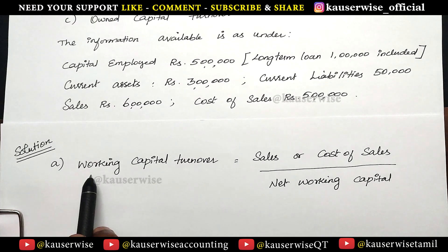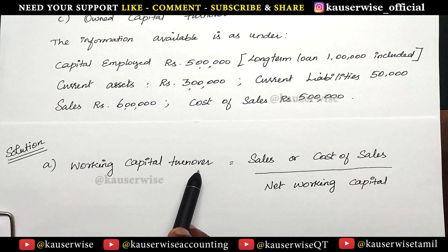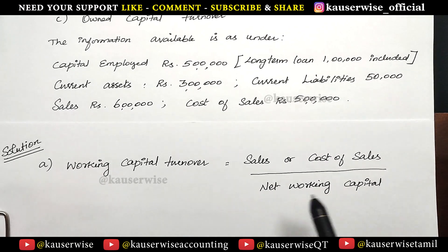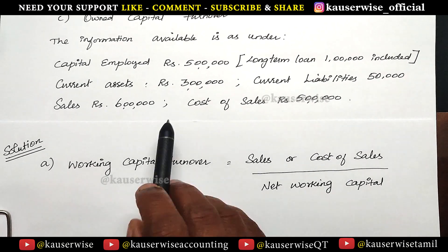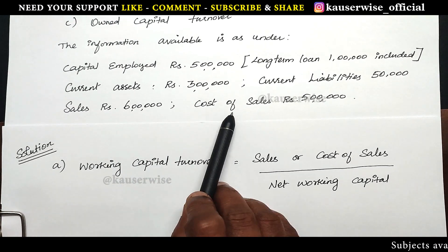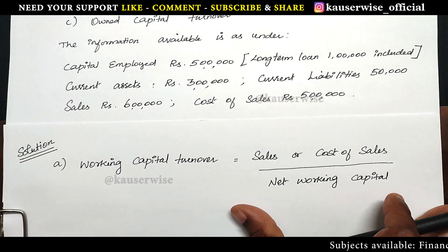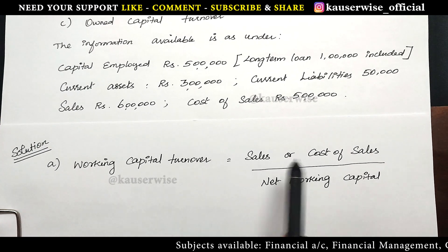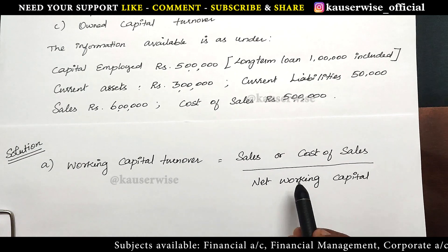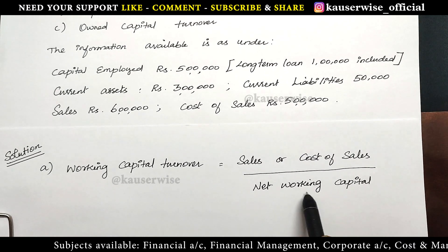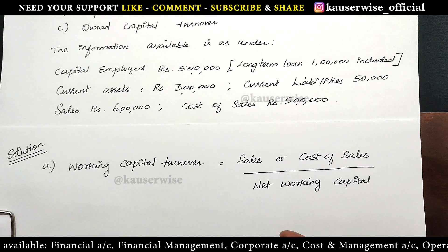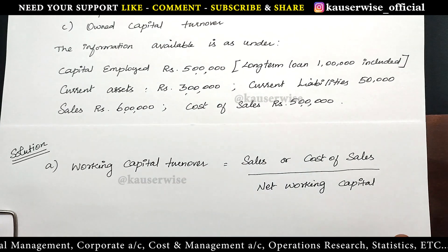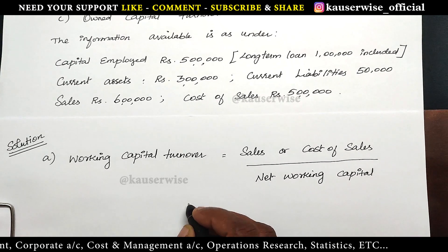We are going to calculate the first one, that is working capital turnover. The formula is sales or cost of sales divided by net working capital. In our problem we have sales as well as cost of sales, so we are going to find out working capital turnover on sales as well as working capital turnover on cost of sales. The formula for working capital is current assets minus current liabilities.